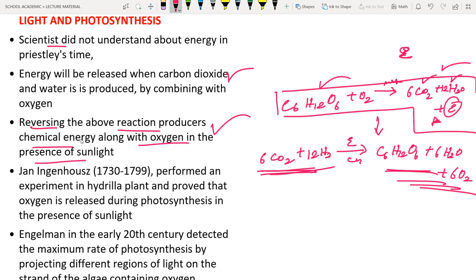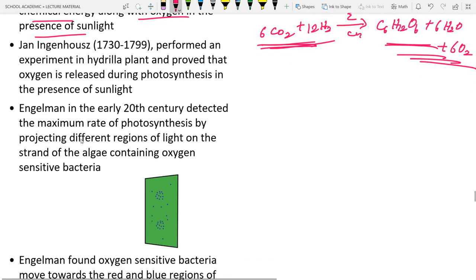Jan Ingenhousz (1730–1799) performed an experiment with hydrilla plants and proved that oxygen is released during photosynthesis. Before discussing the hydrilla experiment, we discuss Engelmann, who in the 20th century detected where maximum photosynthesis occurs.